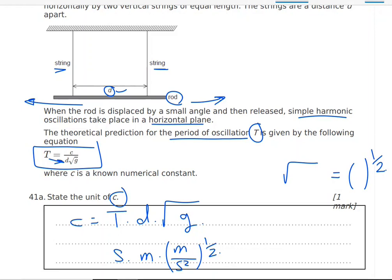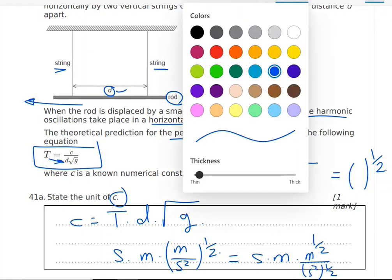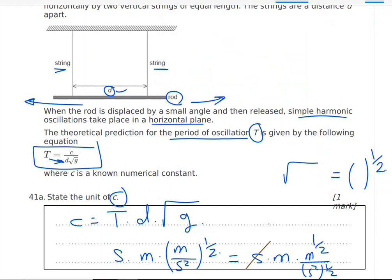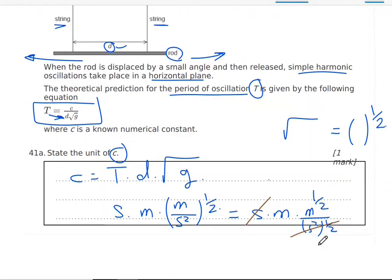Now, this will equal S times M. Times M to the power half. Divided by S to the power two. All to the power half. Half divided by half is one. So I would have S here and S here. They cancel out. M to the power one. Times M to the power half.